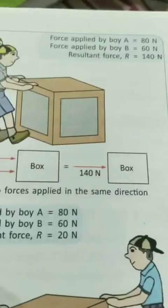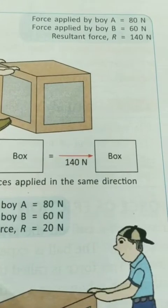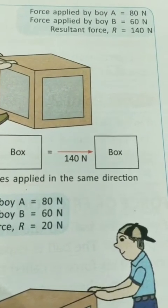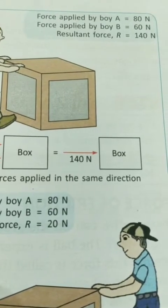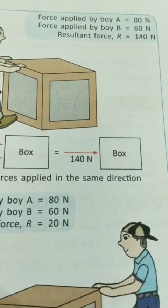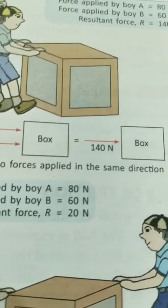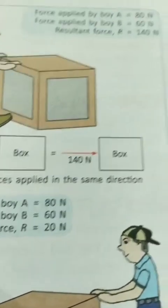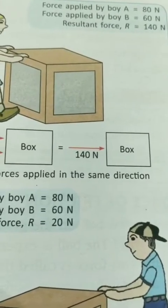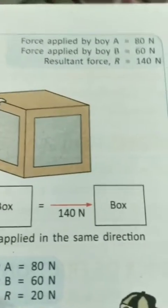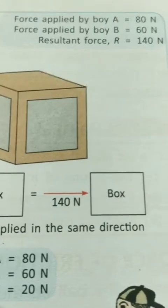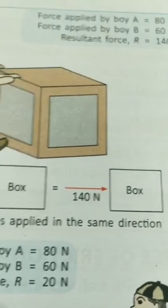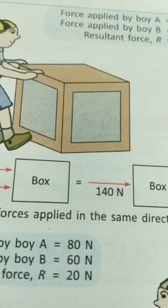When two forces are applied on the object in the same direction, the magnitude of the resultant force will be the sum of both forces applied. For example, if the first boy applies 80 newtons and the second boy applies 60 newtons in the same direction, the resultant force is 140 newtons.